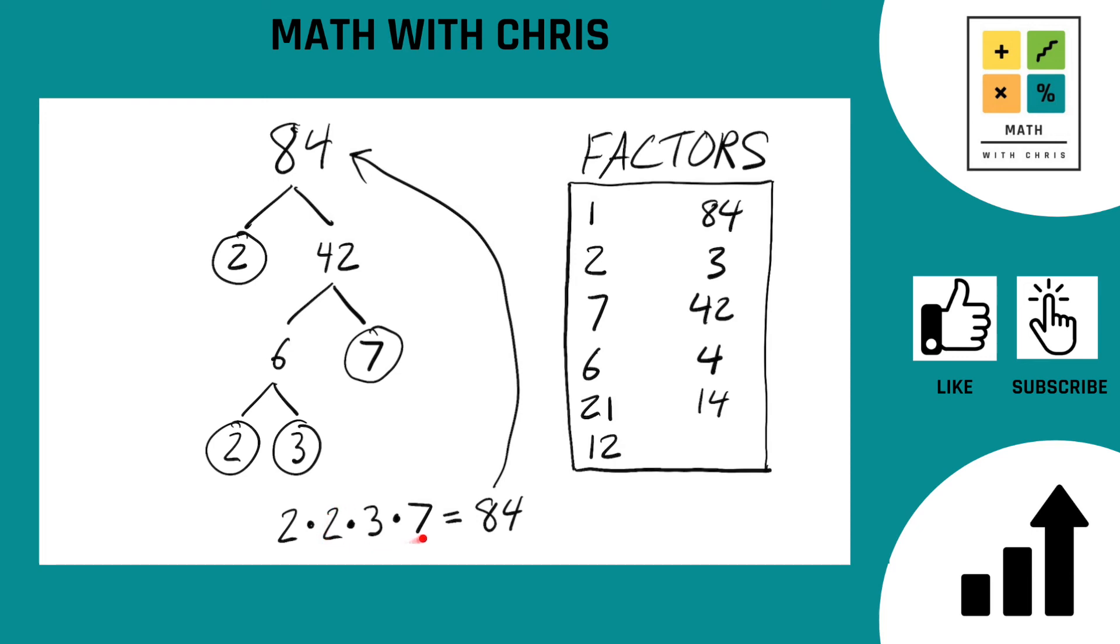What about 2 times 3 times 7? 2 times 3 times 7 is 42. We've already got 42. What about 2 times 2 times 7? Let's skip over that 3. 2 times 2 times 7, that is 28. We do not have 28 yet, so bank the 28.